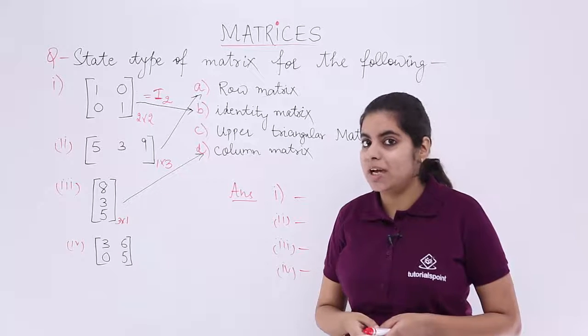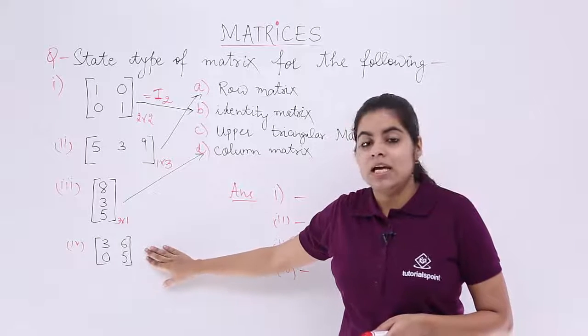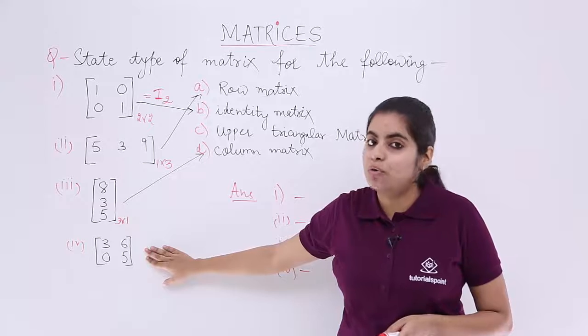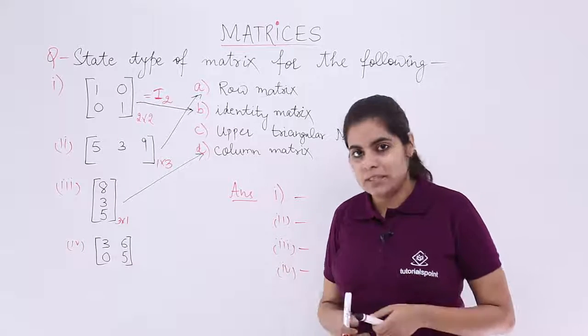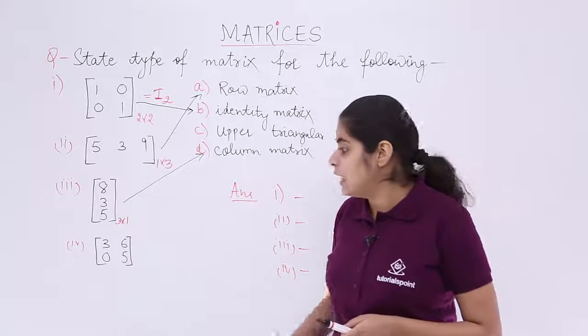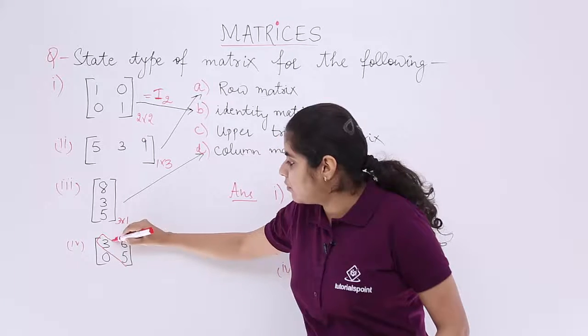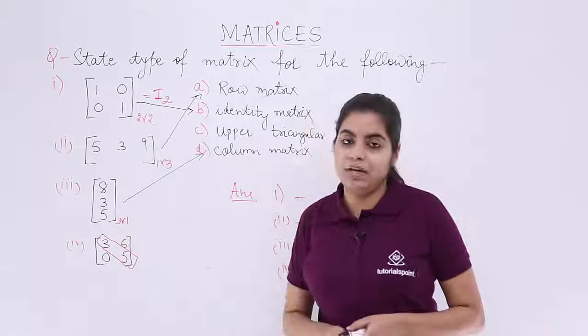Last but not the least, we are left with the fourth part. The fourth part consists of four elements [3 6; 0 5]. Can we specify something about the diagonal? Yes. The diagonal is 3 and 5. It is made up of 3 and 5.